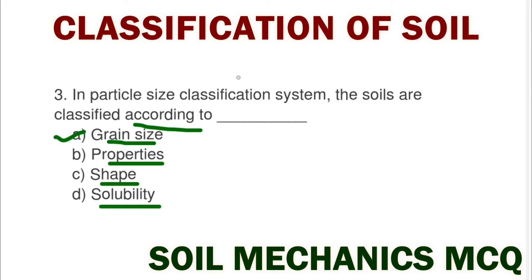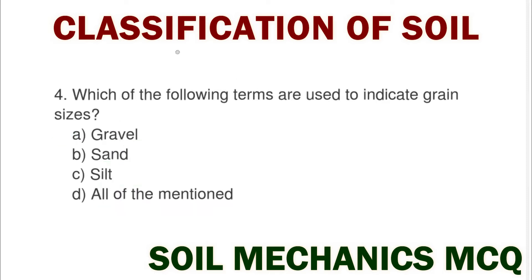Soil is classified by grain size distribution. Next question: which of the following terms are used to indicate the grain size? Option A gravel, option B sand, option C silt, option D all of mentioned. The correct answer is option D all of mentioned.